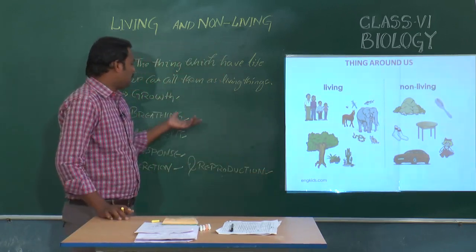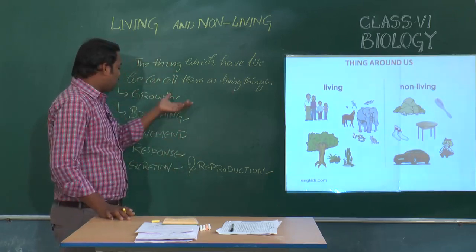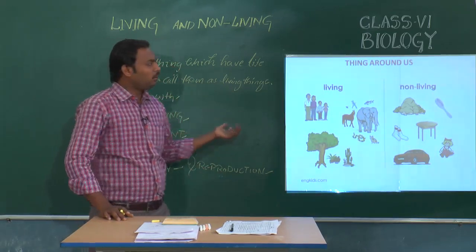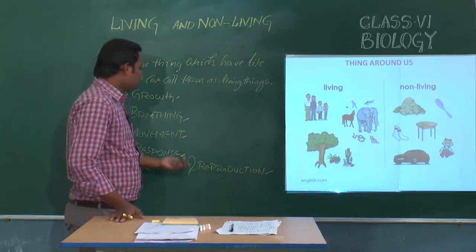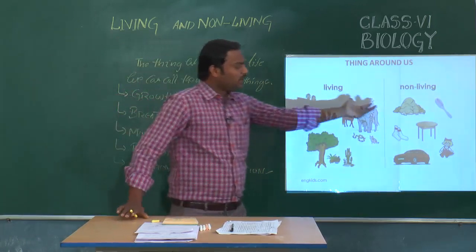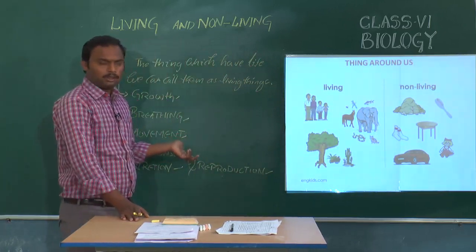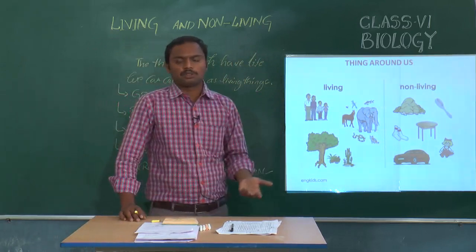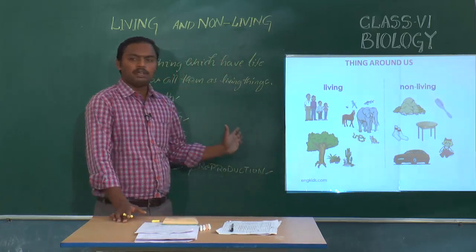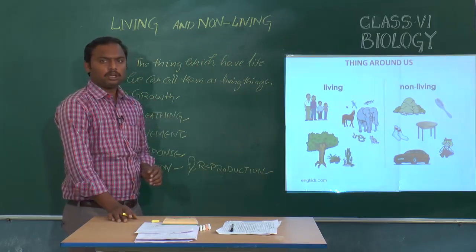In detail we will see how living beings perform all these activities and how they possess all these characteristics. We can also see how non-living things cannot perform all these things. Non-living things cannot move, cannot breathe, and cannot give any response. For example, a bench or a chair is not going to give any response when you hit it or do something to it.